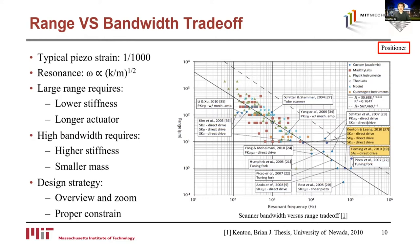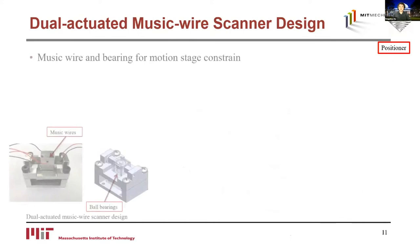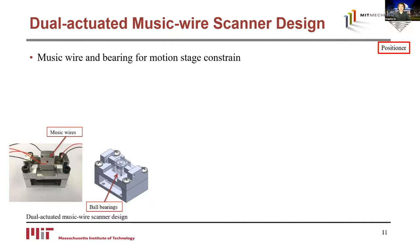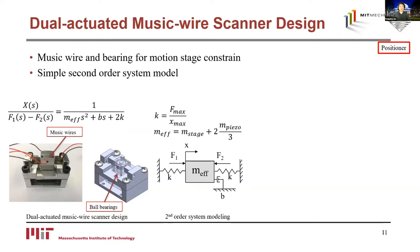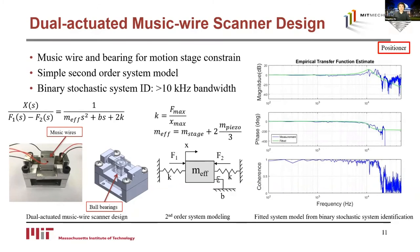The view-actuated music wire scanner uses music wires and ball bearings to constrain a center stage in the out-of-plane z-direction, and two actuators to push the center stage from two directions to minimize drift from thermal expansion in the x-direction. A simple second-order system model captures the linear dynamics. Using binary stochastic system identification, we achieved a 10 kHz in-plane scanner bandwidth and over 100 kHz out-of-plane scan bandwidth. This scanner is stacked on a commercial large-range 100-micron scanner for overview-and-zoom imaging, and is used in the versatile sample scan AFM.